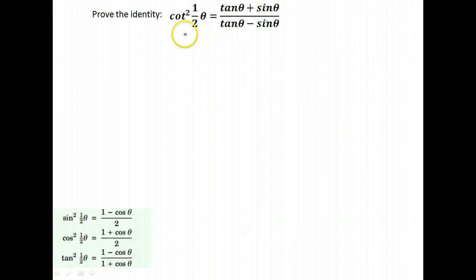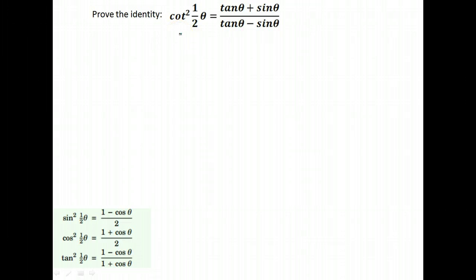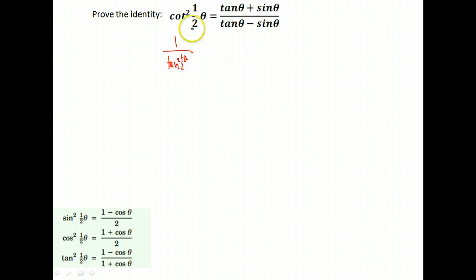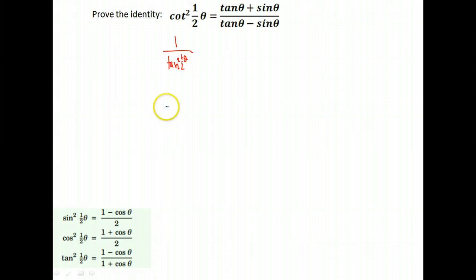There are two ways we could go with this. We could either use the fact that cotangent is one over tangent, or we could try going the route of cotangent is cosine over sine. I'm going to go ahead and go with one over tangent squared. So I'm rewriting cotangent squared as tangent squared of one-half theta. What is tangent squared of one-half theta equal to? It's equal to one minus cosine over one plus cosine.